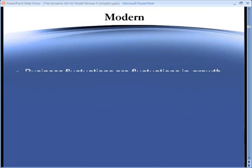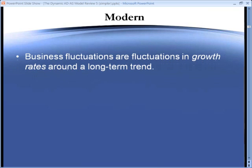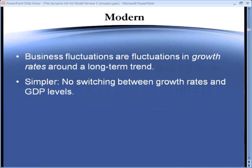From the modern point of view, business fluctuations are fluctuations in growth rates around a long-term trend. This actually makes things simpler because there's no switching in the Modern Principles between growth rates and GDP levels.